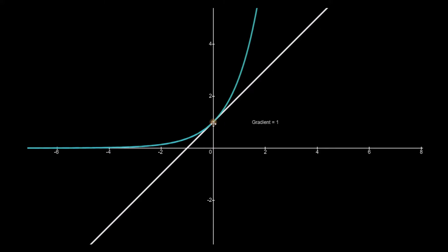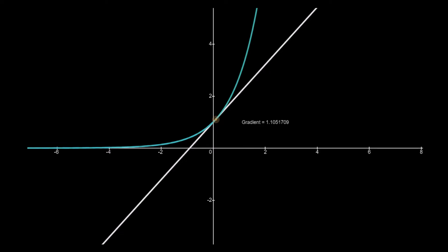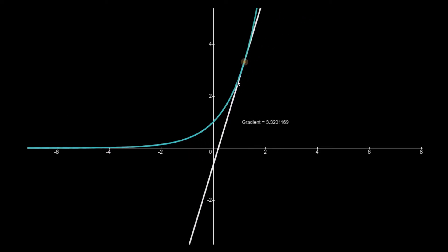For example, the height of this point in the function is 1 and the gradient is 1. If we move it along to any other point, you'll see that the height of this function is 3.32, so the height of the function is equal to the gradient at that point. This means that whenever we differentiate this function, this is the unique function in mathematics whereby if we differentiate it, we just get back to the very same function.